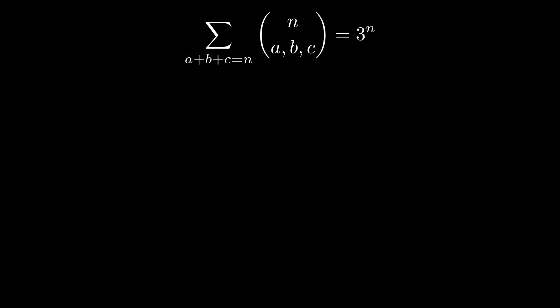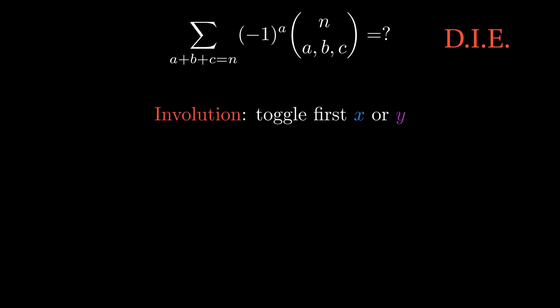Okay, we're getting the hang of things. Let's review the DIE technique with a quick example adapting the sum that we just did. We know that without the alternating part this counts xyz step paths of length n. The sign of the path counted is the parity of the number of x steps. If you want to figure out a sign reversing involution on these configurations for yourself, pause quickly because I'm about to tell you one.